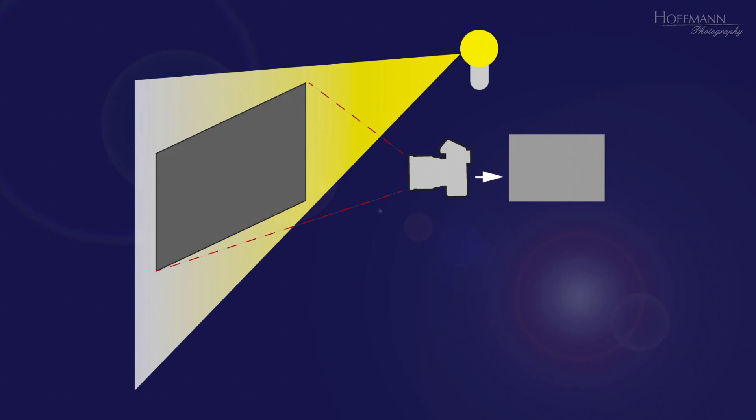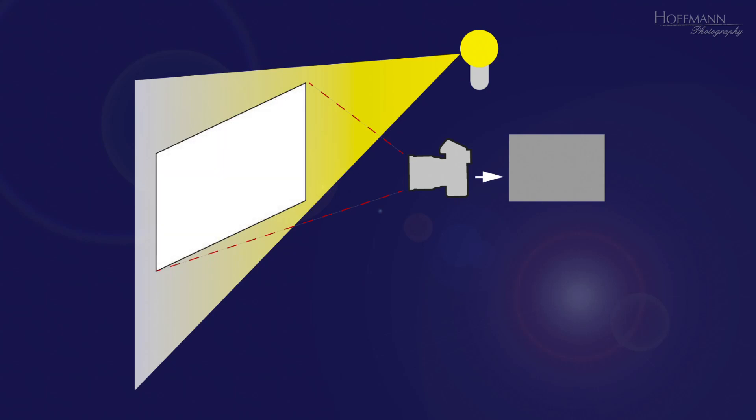Exactly the opposite happens in case of the white cardboard. It reflects a lot of light, so the exposure meter again tries to compensate, but this time by decreasing the exposure. And as a result, the white cardboard appears grey, just as the black one.